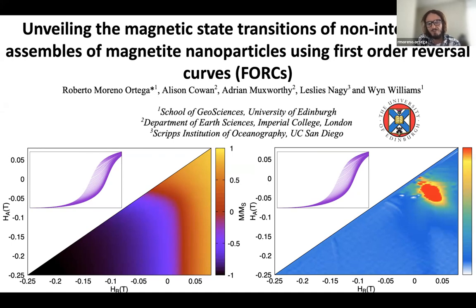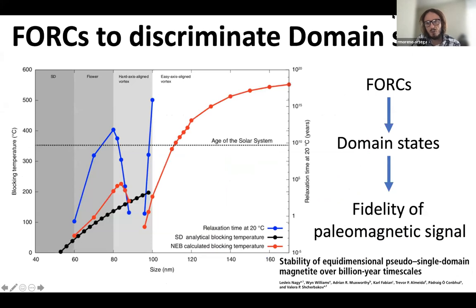FORCs, or First Order Reversal Curves, are very important because it's a strategy to characterize magnetic materials. Specifically in the paleomagnetic community, it is used to determine the domain state of the magnetic crystals presented in natural samples.